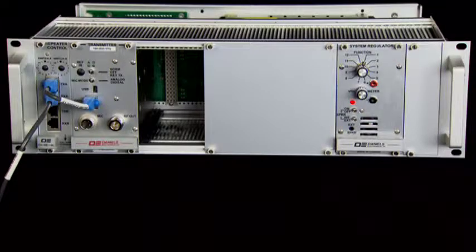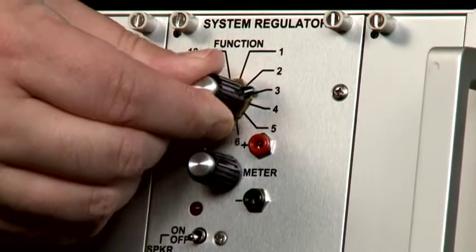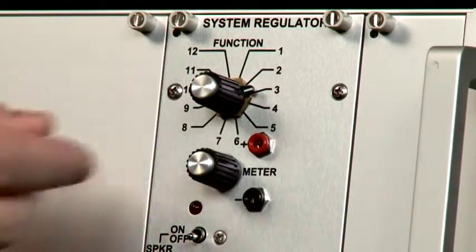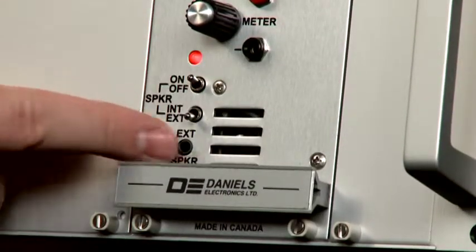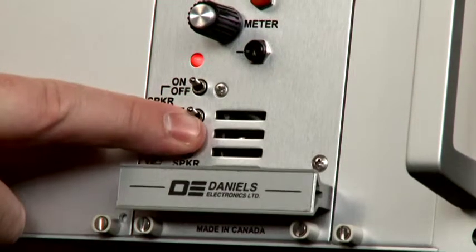Turn the system regulator function rotary switch to position 3 for receiver A and position 5 for receiver B if used. Turn the speaker switch on and ensure it is set for internal speaker.